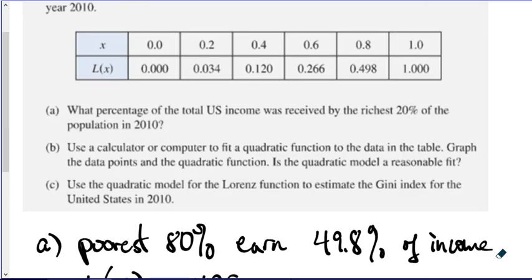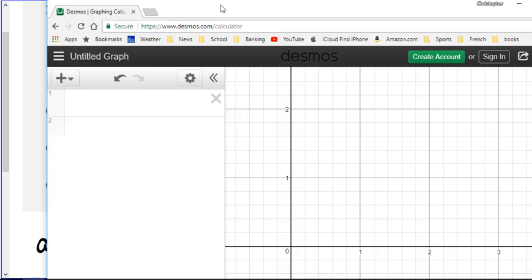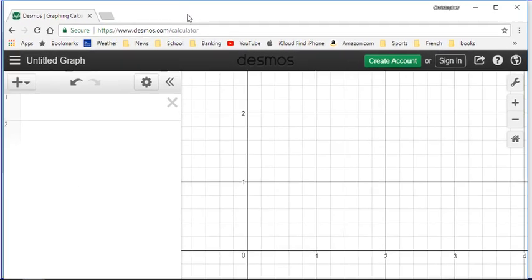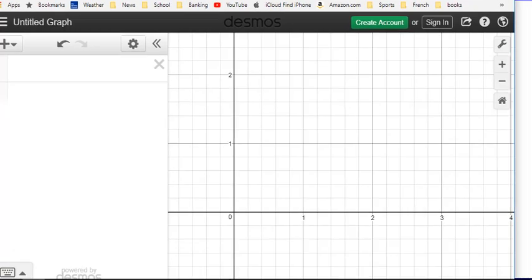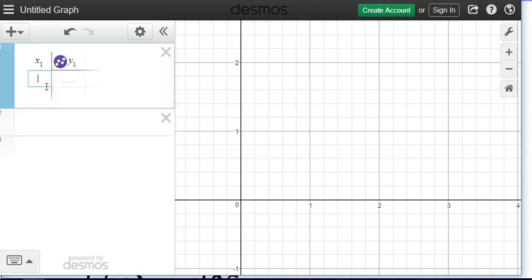Moving on to part B, use a calculator or computer to fit a quadratic function to the data in the table, graph the data points and the quadratic function, decide if it's a reasonable fit. You could do this on the calculator, but this is an interesting way to do it with desmos.com. To do this on Desmos, you begin by taking this little pull down and say, let's do a table, and then type in the data.